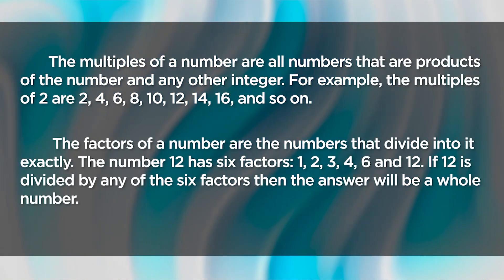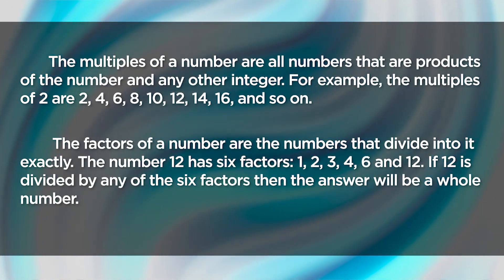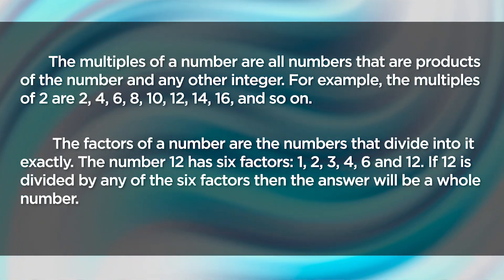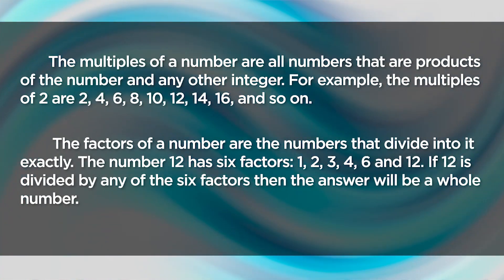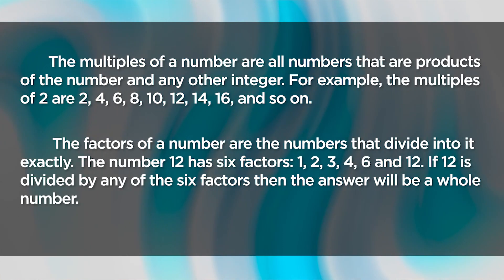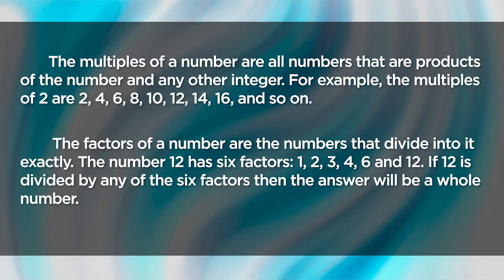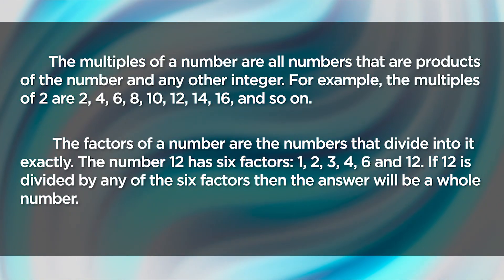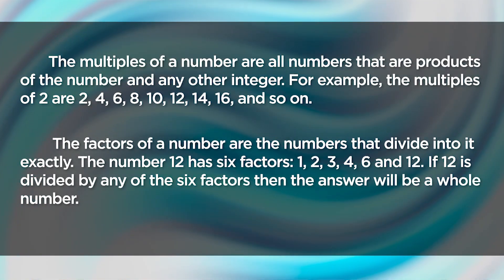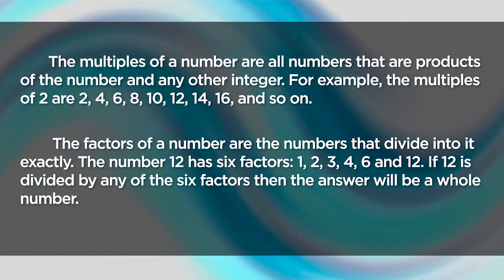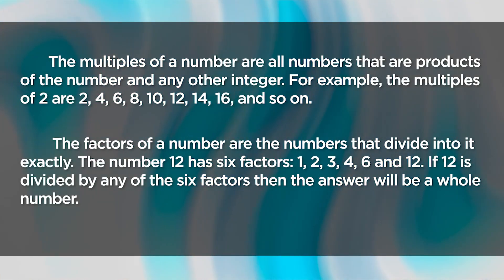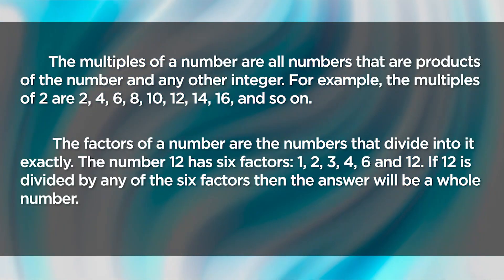The factors of a number are the numbers that divide into it exactly. For example, the number 12 has 6 factors: 1, 2, 3, 4, 6, and 12. If 12 is divided by any of the 6 factors, then the answer will be a whole number.